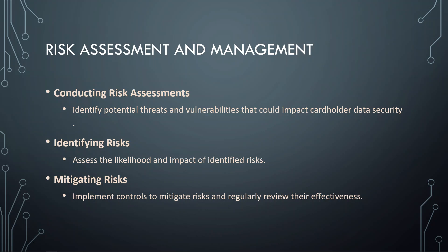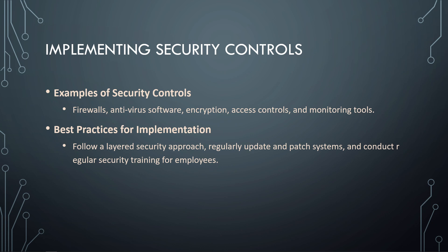To implement PCI DSS standards, the first step is to conduct a risk assessment — identify potential threats and vulnerabilities that could impact cardholder data, assess the likelihood and impact of identified risks, and then mitigate those risks by implementing controls and regularly reviewing their effectiveness. Security controls to implement include firewalls, antivirus software, encryption, access controls, and monitoring tools. Best practices include following a layered security approach, regularly updating and patching systems, and conducting regular security training for employees.